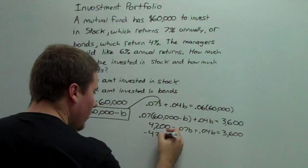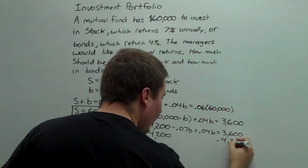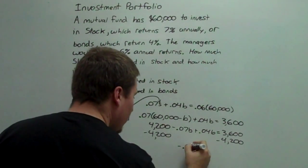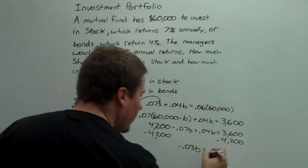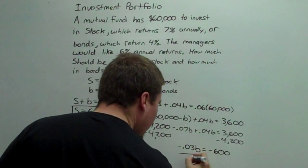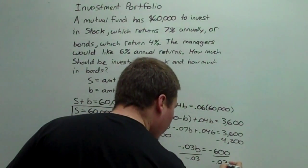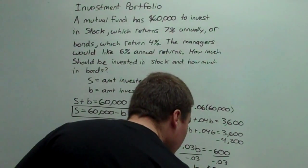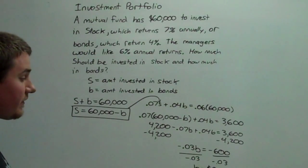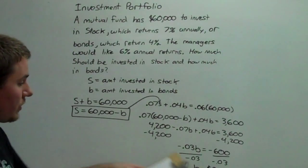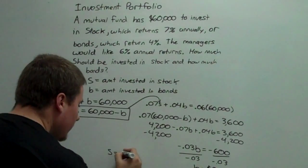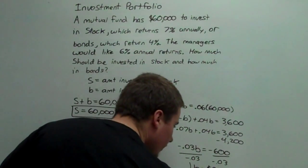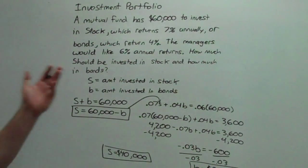Now we subtract 4,200 from both sides and combine like terms. Negative 0.07 and 0.04 gives us negative 0.03B equals negative 600, so we should invest $20,000 in bonds. It's a fairly simple relationship: if we have $60,000 to invest and $20,000 are in bonds, then the other $40,000 are in stock. So $40,000 in stock and $20,000 in bonds will give us the appropriate 6% annual return.